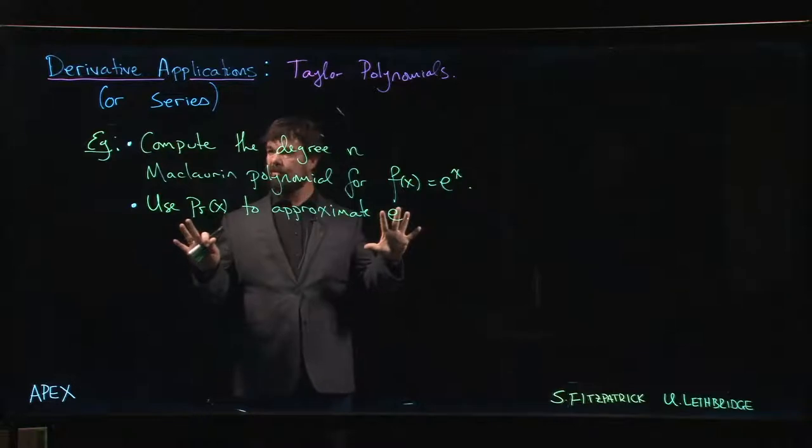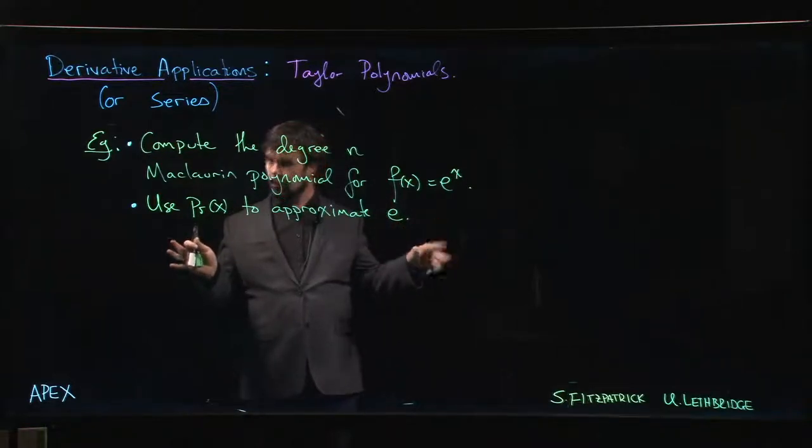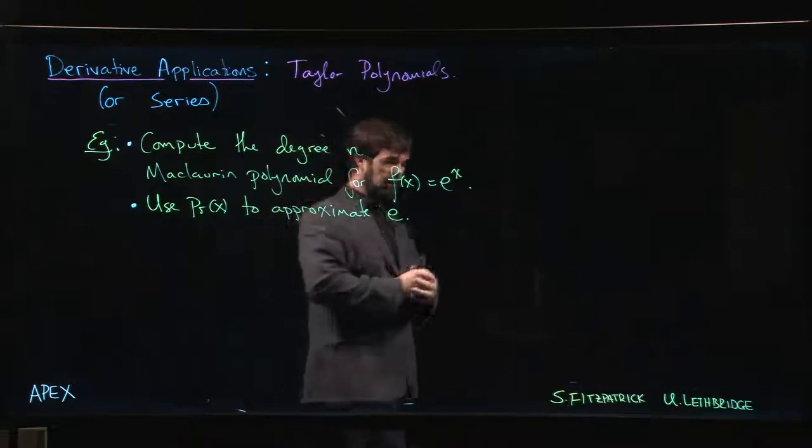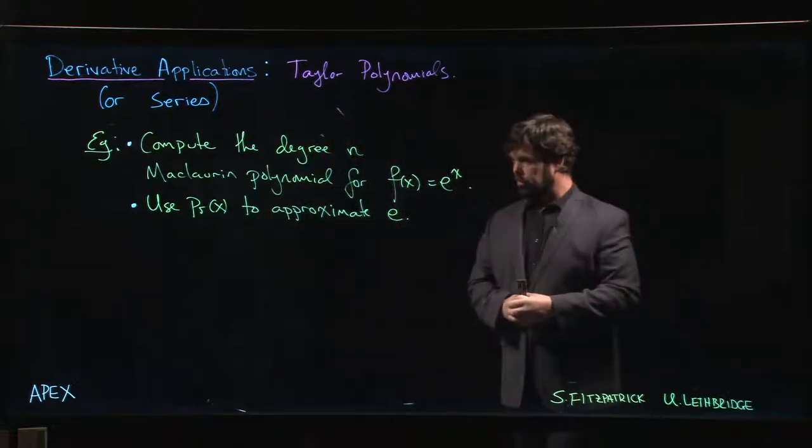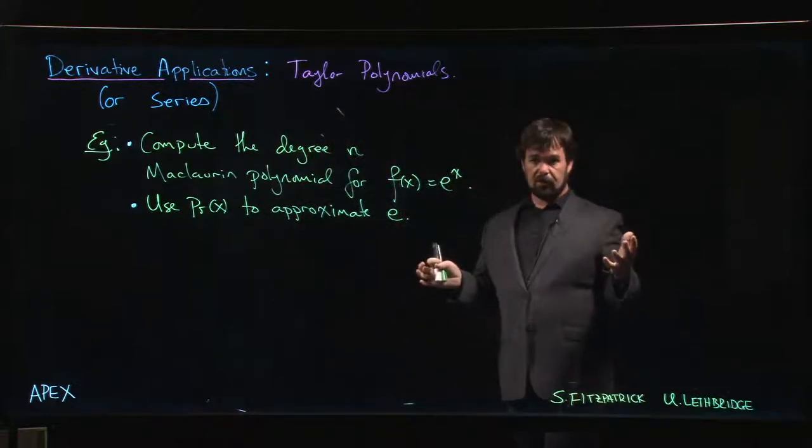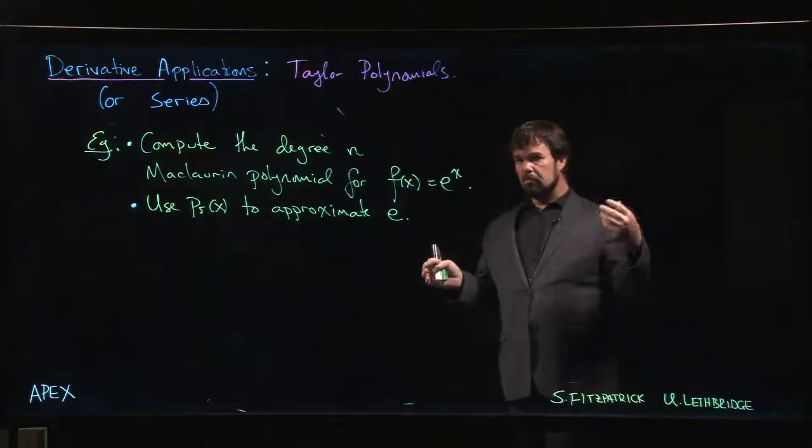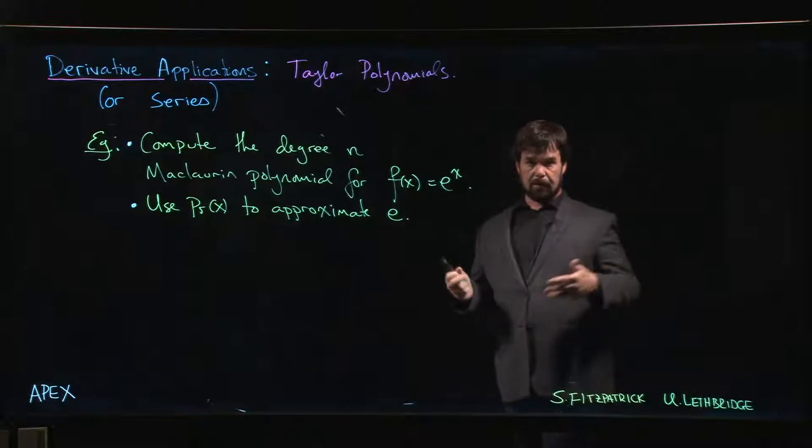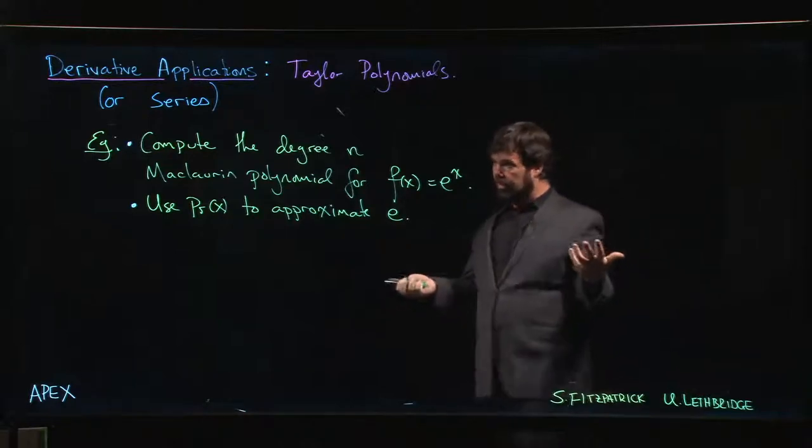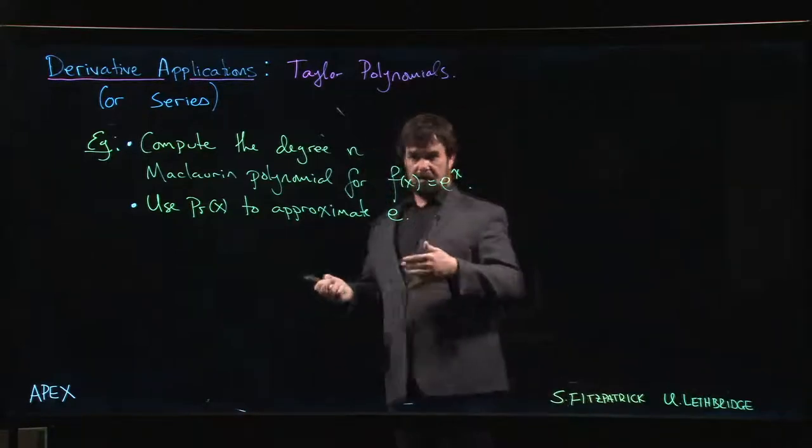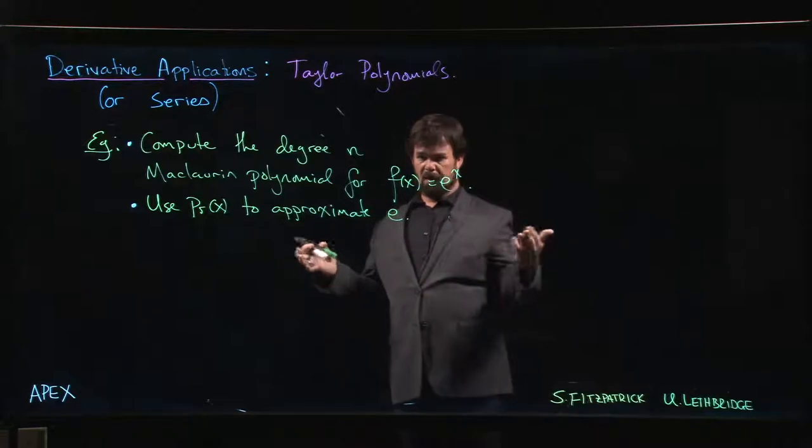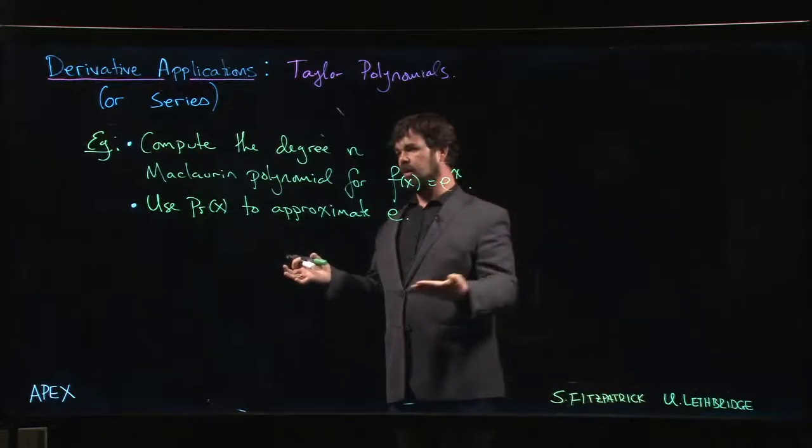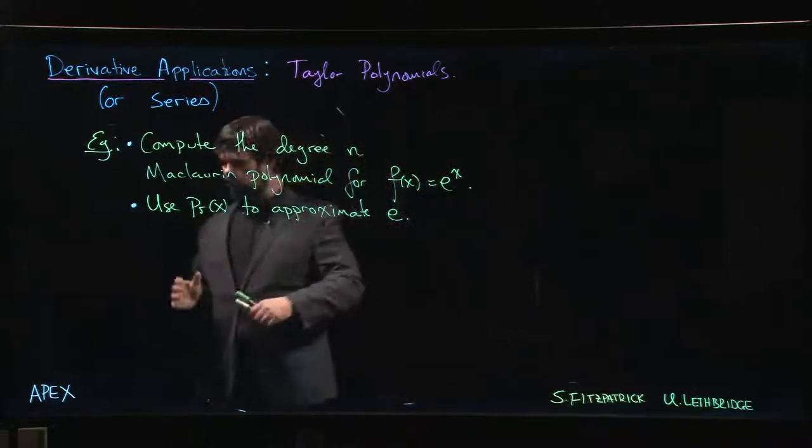Alright, let's start with an example here, a standard relatively simple example computing Taylor polynomials. We hope this example illustrates a couple of things: how the process works, how you come up with the Taylor polynomial, how you sort of identify patterns and then generalize to degree n. If we wanted degree 100, we're not going to calculate 100 derivatives; we want to figure out what's going on.